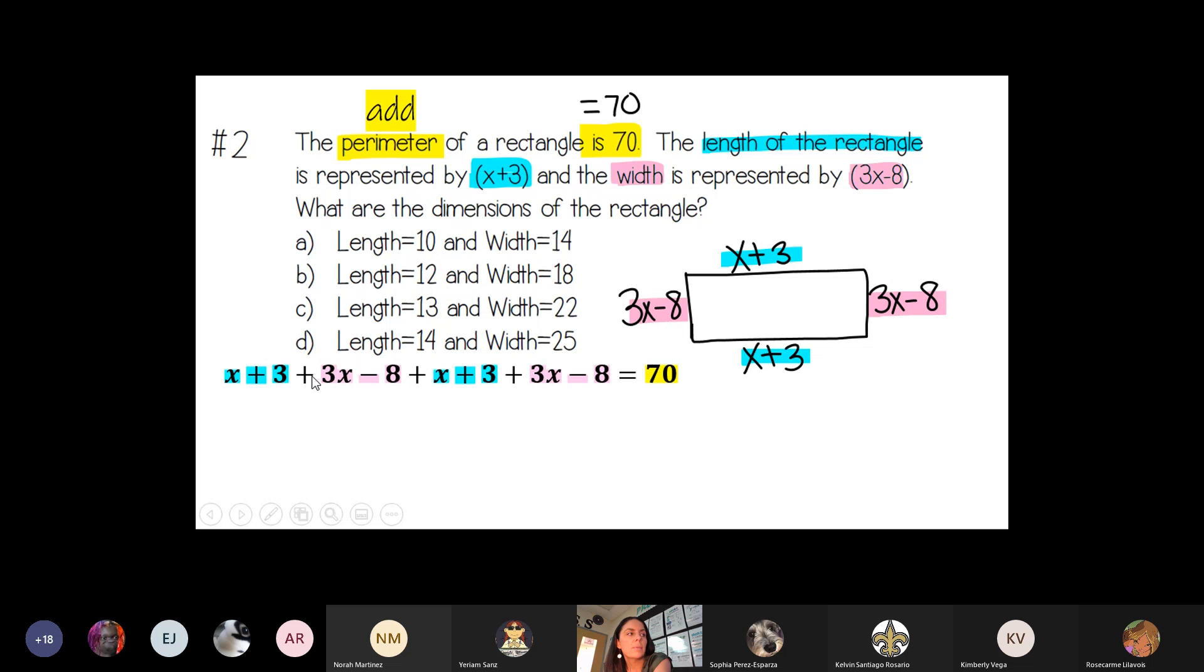So x plus 3x plus x again is 5x plus 3x is 8x. And then 3 minus 8 plus 3 minus 8 is going to be a negative 10. So that simplifies to be 8x minus 10 is equal to 70.